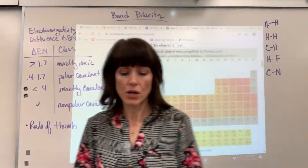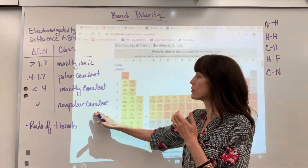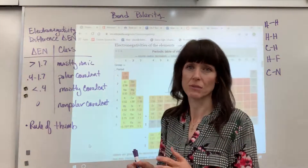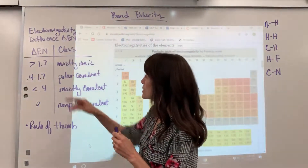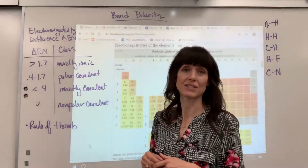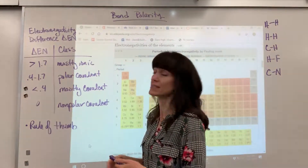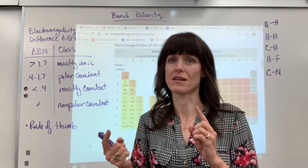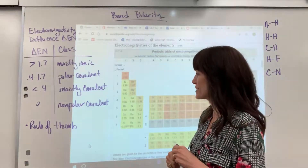To calculate this, we use a classification table based on electronegativity difference. If the difference between two atoms' electronegativities is greater than 1.7, it's called mostly ionic. If it's between 0.4 and 1.7, it's classified as polar covalent. If the difference is less than 0.4, it's mostly covalent. And if it's zero, it's nonpolar covalent — the electrons spend equal amounts of time next to both atoms, with no partial negative or partial positive.